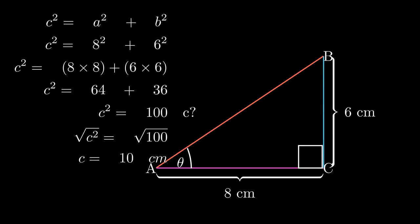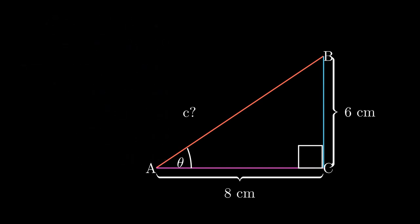What if we were given c and we don't know what BC is or maybe what AC is, how can you solve for any of these two sides? In this case, we're going to look at an example where we have AB as 10 centimeters and we have AC as 8 cm. But what we don't have in this case is BC. We don't know what it is. Can we use the Pythagorean theorem to solve this? Of course, we can.